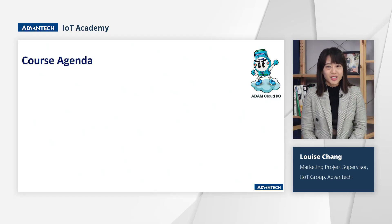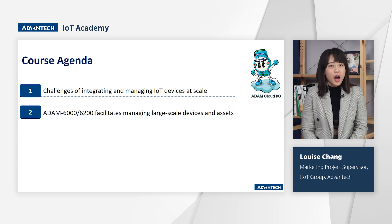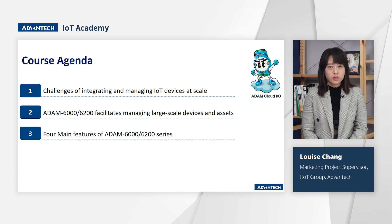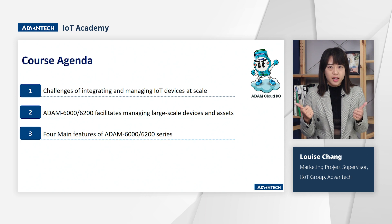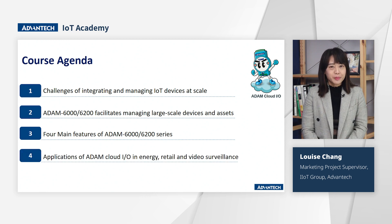We will help you understand the key points as follows: the challenges of integrating and managing IoT devices at scale; how Advantech's newly launched Cloud I.O. ADAN 6000 and 6200 series addresses the challenges of managing large-scale devices and assets; the four main features of ADAN 6000 and 6200, including device management, OTA update, security, and I.O. control, which facilitates seamless remote access, monitoring, and management of IoT devices through secure communication. Finally, how ADAN Cloud I.O. can be effectively applied in the energy, retail, and video surveillance applications.